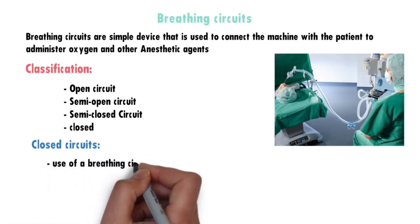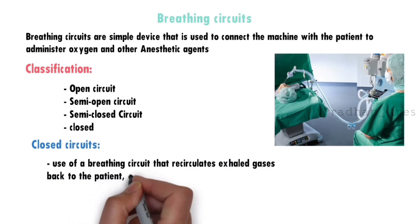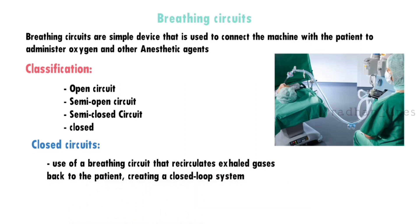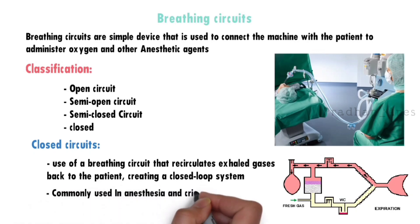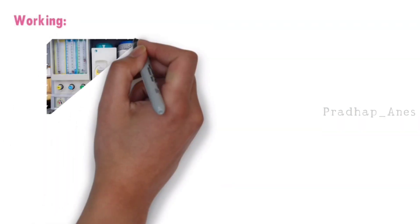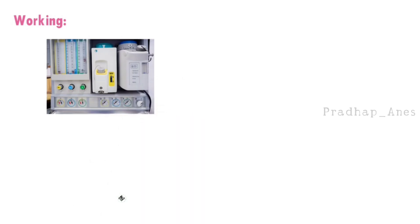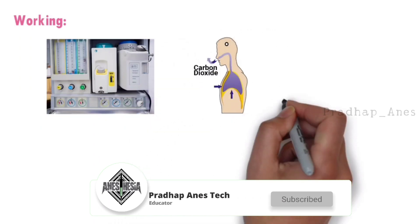Closed circuits refer to the use of a breathing circuit that recirculates exhaled gases back to the patient, creating a closed loop system. This type of circuit is commonly used in anesthesia and critical care settings, as well as in mechanical ventilation. We usually administer oxygen, nitrous oxide, and other inhalational agents during general anesthesia. Patients breathe in all those things and exhale carbon dioxide and anesthetic gases.